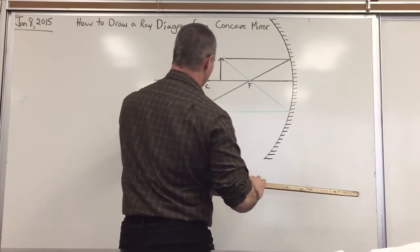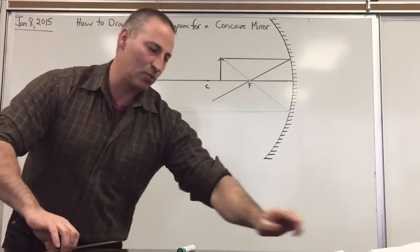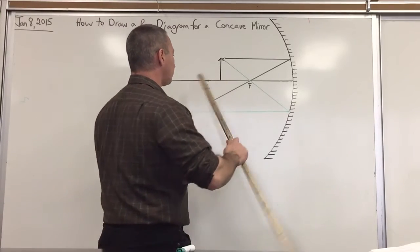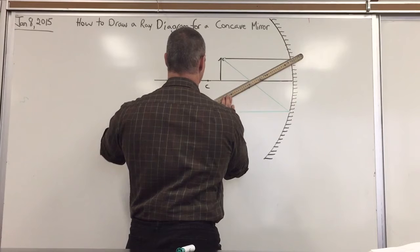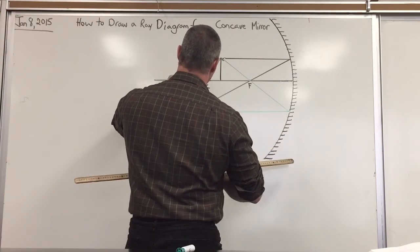I didn't draw my first ray long enough. Where the two intersect is where you will get the image forming. The image formed over here.